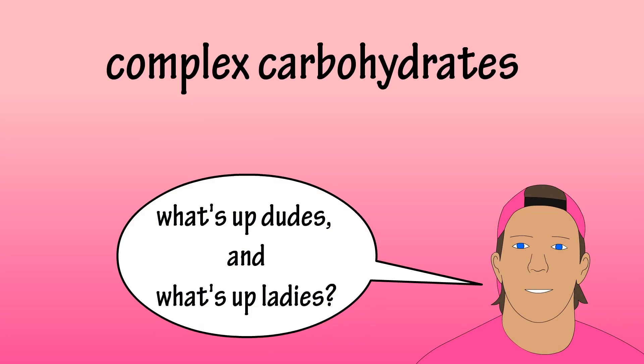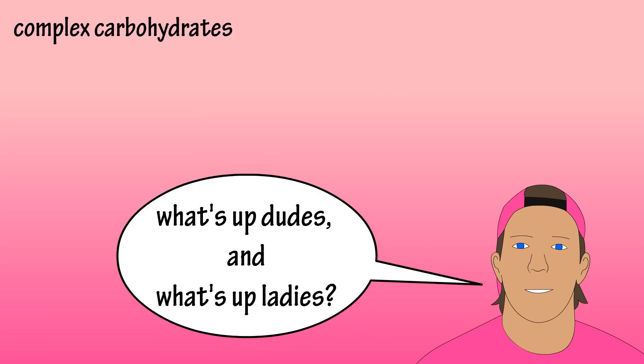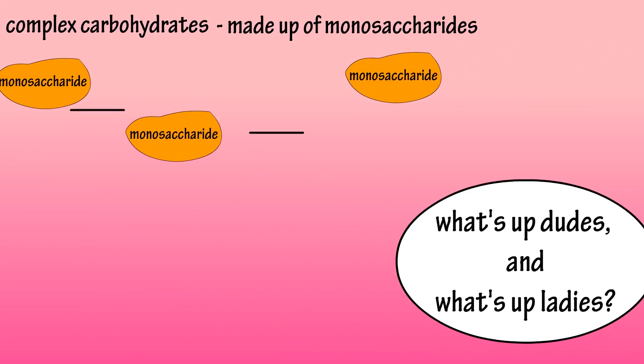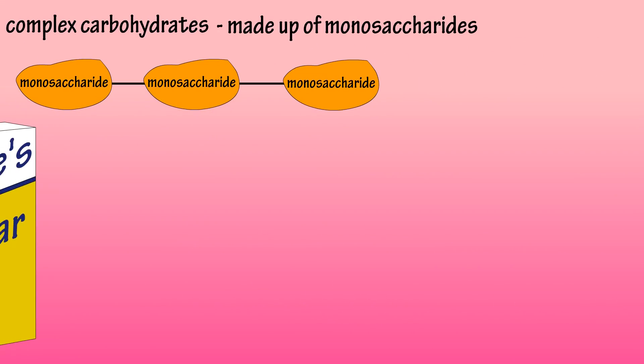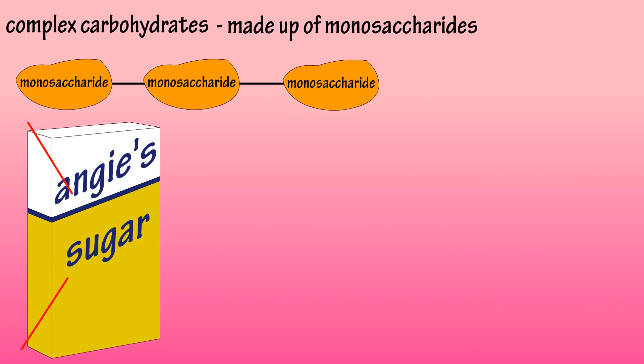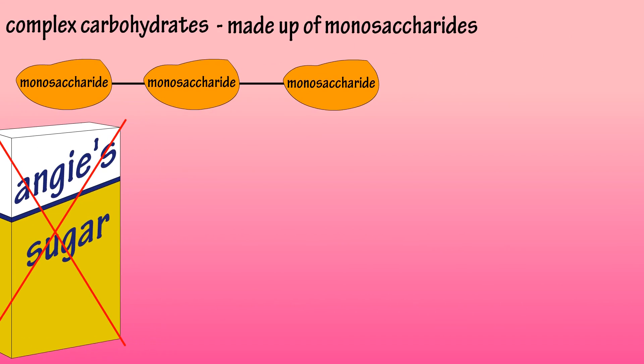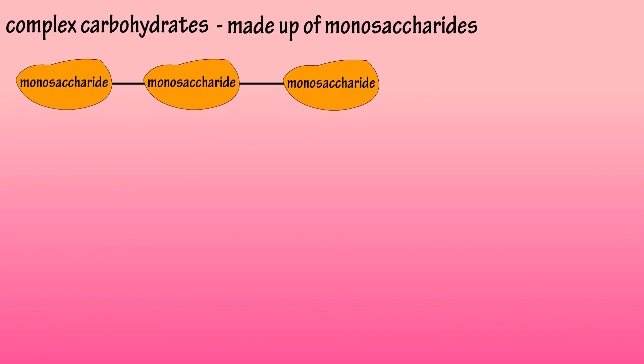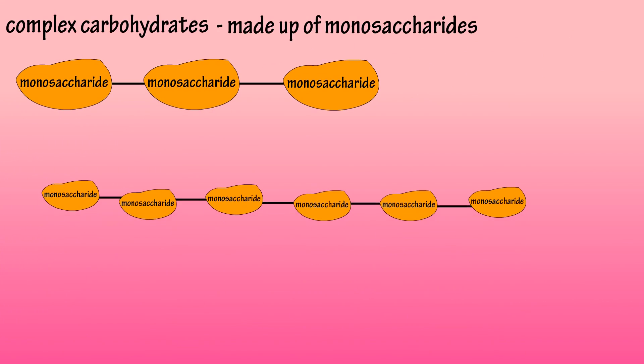Complex carbohydrates are made up of monosaccharides, or simple sugar molecules — not the table sugar that might come to mind. These molecules are joined together to form long chains.